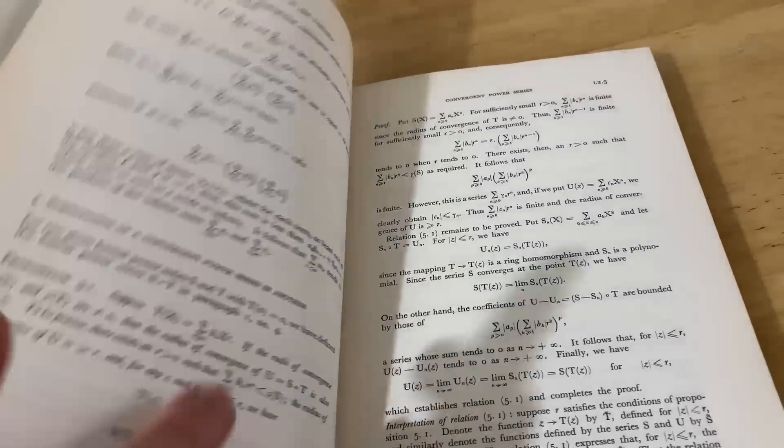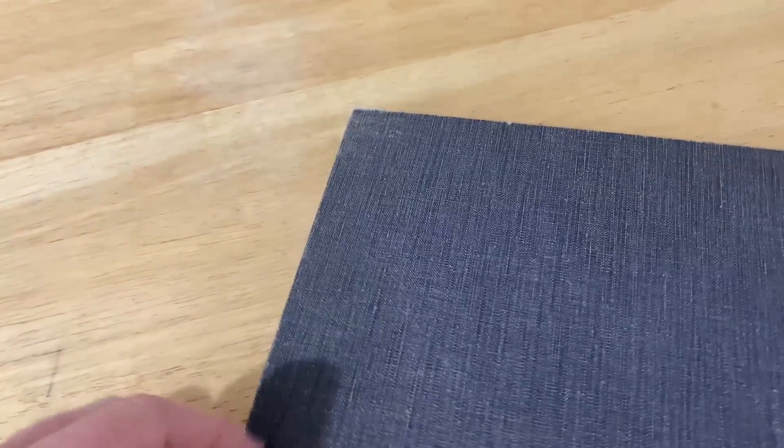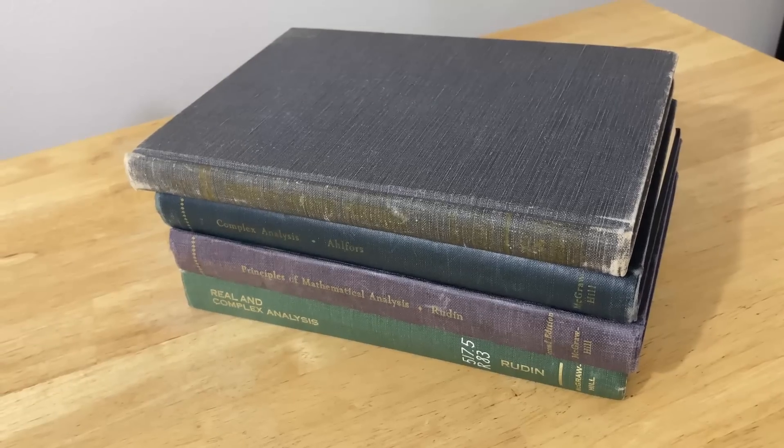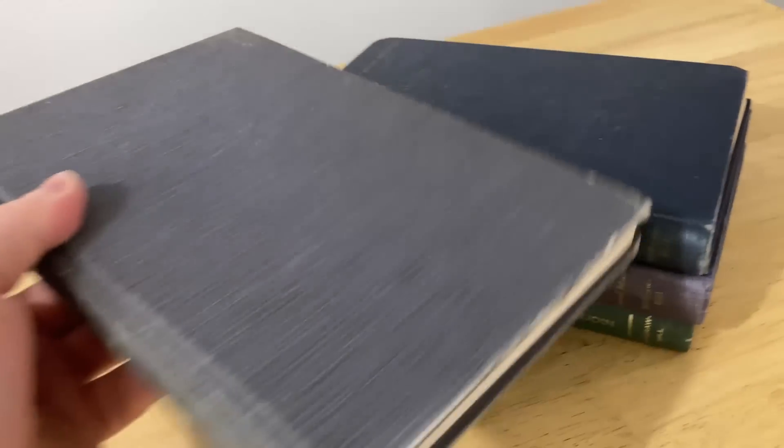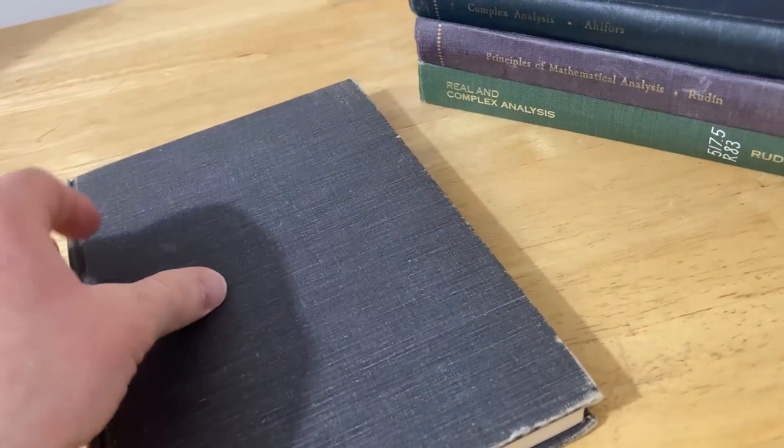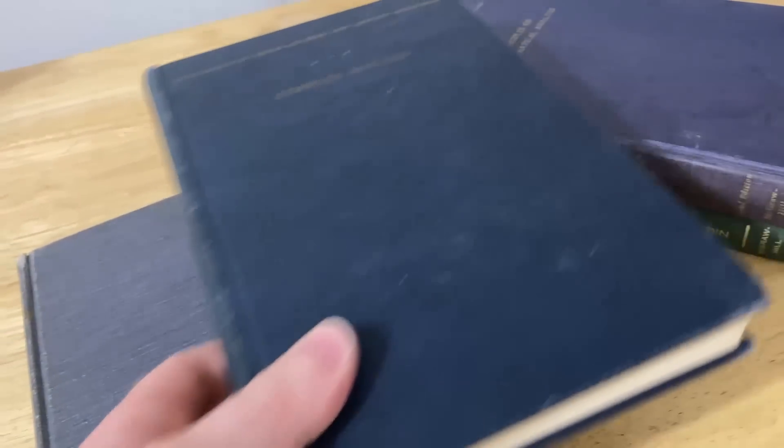I mean, Cartan just goes at it. So very rigorous, very classic text on complex variables. So those are four classic texts on various subjects. The Cartan book being a complex variables book, aka complex analysis, along with the book by Alfors.